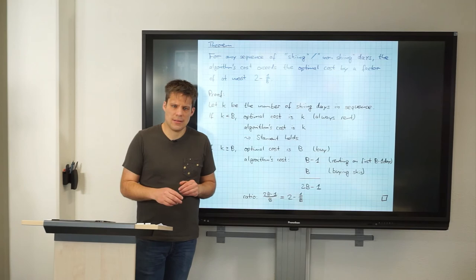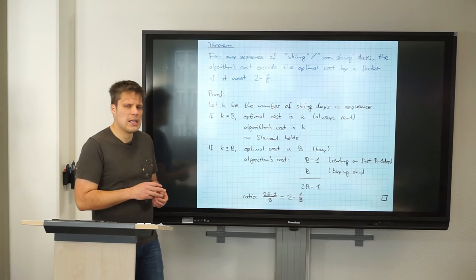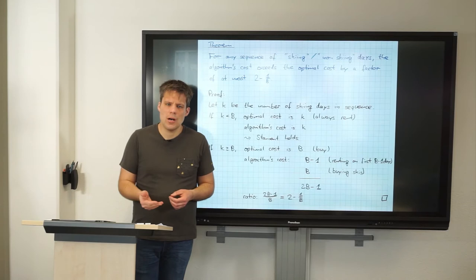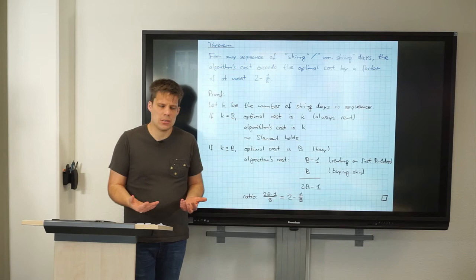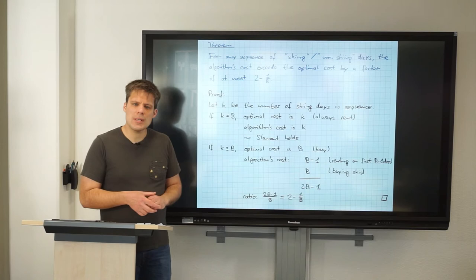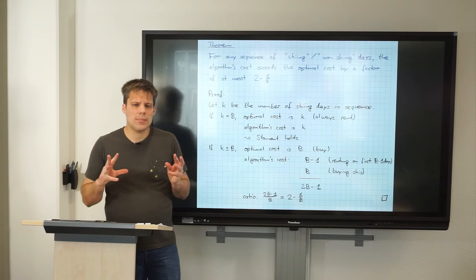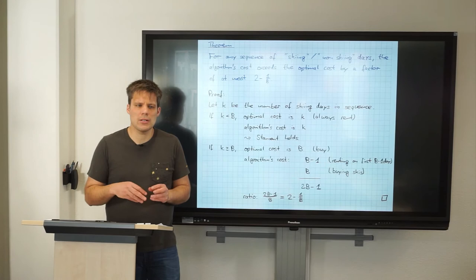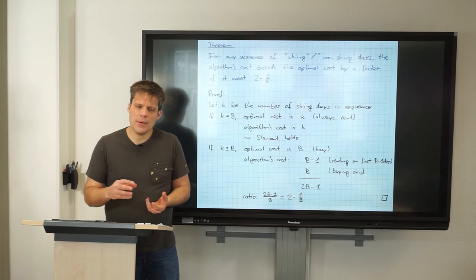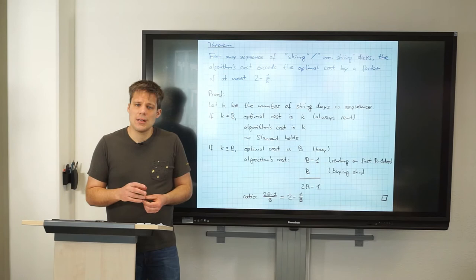The important thing to notice is that competitive analysis works without any prior knowledge. The algorithm doesn't need any prior knowledge on what is likely to happen — it always does a reasonable thing. This is a strong perspective if you assume to have very little knowledge, or if your knowledge is incorrect, or if you don't know how to model your knowledge. There are also other ways of capturing uncertainty, which I'll discuss later.